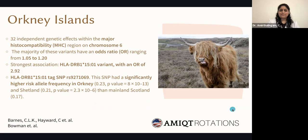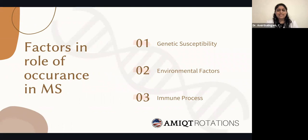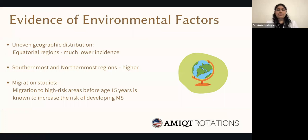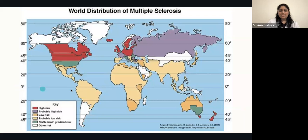Beyond genetics, are there other risk factors? Genetic susceptibility combined with environmental factors can lead to this immune process. There is an uneven geographic distribution — equatorial regions have a much lower incidence compared to the northern and southern parts of the globe. Migration studies show that an individual who migrates to a higher-risk area before age 15 is at increased risk of developing multiple sclerosis. As shown on the world distribution map, risk is low near the equator but increases moving north or south, with Canada, Europe, and Australia among the highest-risk regions.